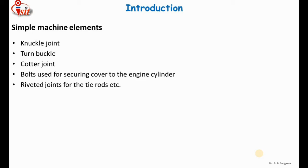These machine elements are subjected to a direct type of load. Direct load means the load which produces the same kind of effect in the machine member all the time — the load does not change its magnitude and direction. This is the main cause of stress in simple machine elements. The applied load and induced stress may be tensile, compressive, or shear. The dimensions of these simple machine parts are determined on the basis of pure tension, pure compression, direct shear, bending stress, or torsion stress.